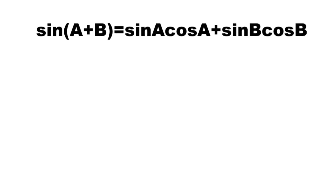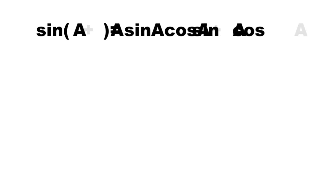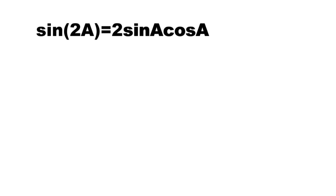From the sum of two angles identity for sine, we have sine(a + b) = sine(a)cosine(b) + sine(b)cosine(a). But if a is equal to b, then this becomes sine(a + a) = sine(a)cosine(a) + sine(a)cosine(a). Simplifying, sine(2a) = 2sine(a)cosine(a). This means the sine of the double angle equals double the product of sine and cosine of that angle.